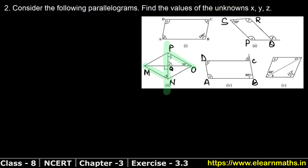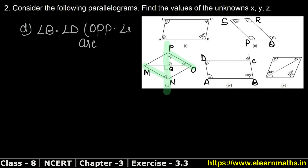In part D, angle B equals angle D because opposite angles of a parallelogram are equal.